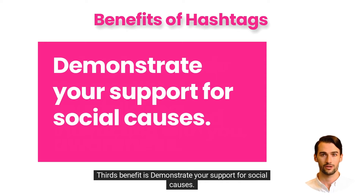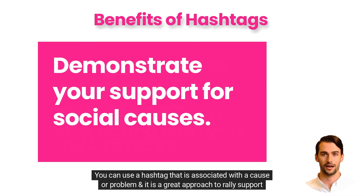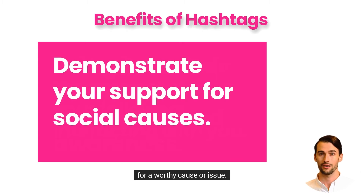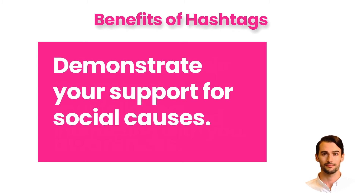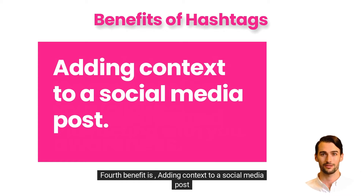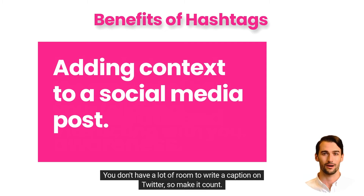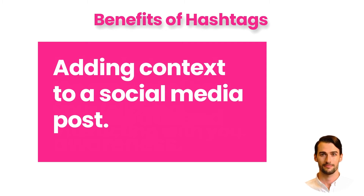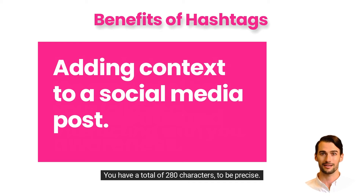The third benefit is you can demonstrate your support for social causes. You can use a hashtag that is associated with a cause or problem — it is a great approach to rally support for a worthy cause or issue. The fourth benefit is adding context to a social media post. You don't have a lot of room to write a caption on Twitter, so make it count — you have a total of 280 characters to be precise.